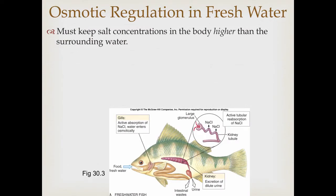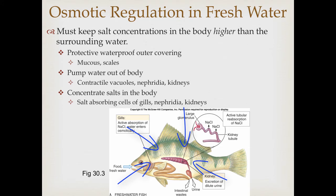How do animals deal with extremely low or high salt concentrations? In freshwater, the challenge is keeping the salt concentrations in the body higher than in the surrounding water. Because you're in freshwater with low salt concentrations, but you need solutes — salts and sugars — in your bloodstream and body fluids. As a result, there's a constant potential flow of water from the environment coming into your body, and so their challenge is to keep too much water from coming into the body tissues.